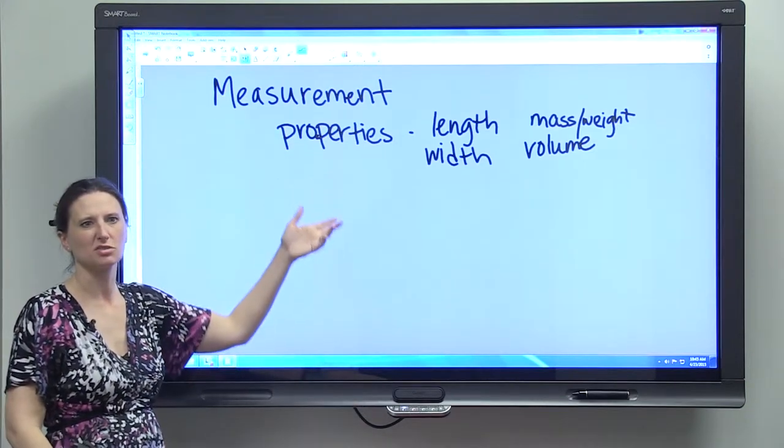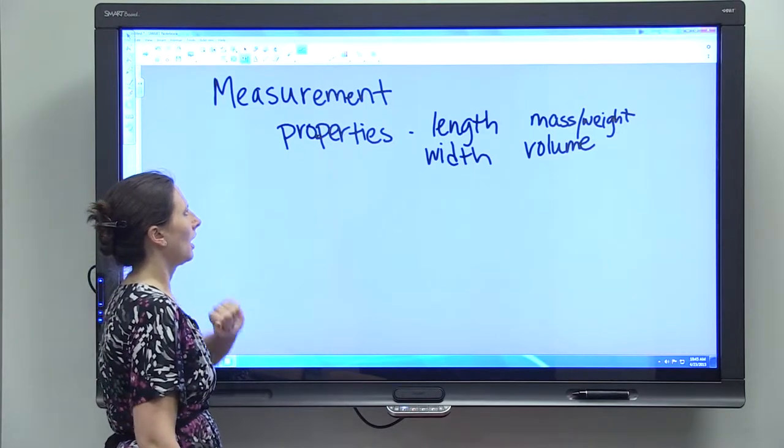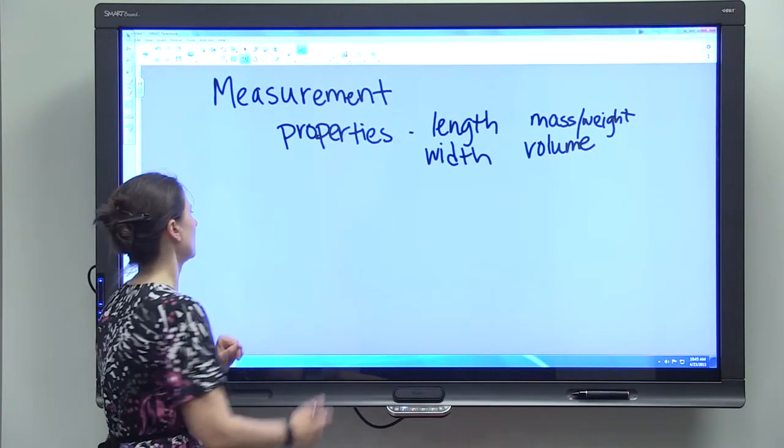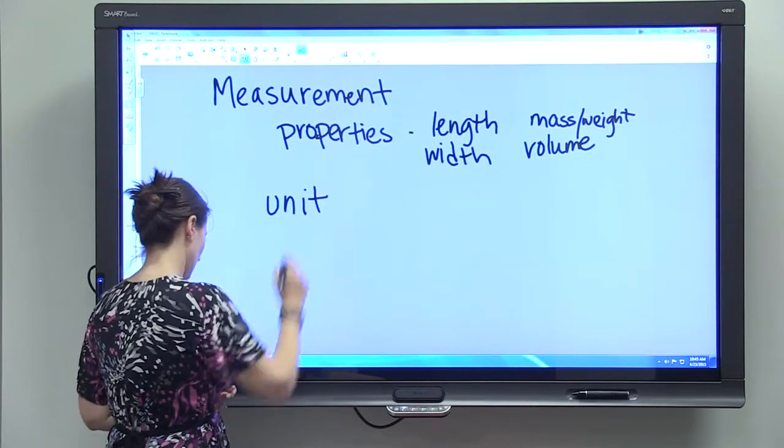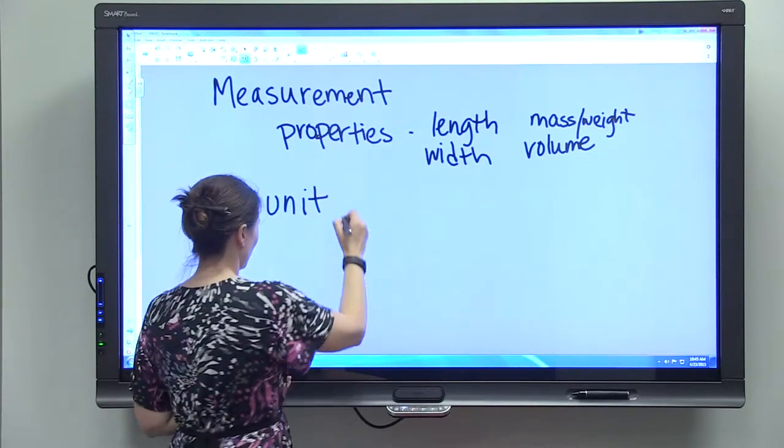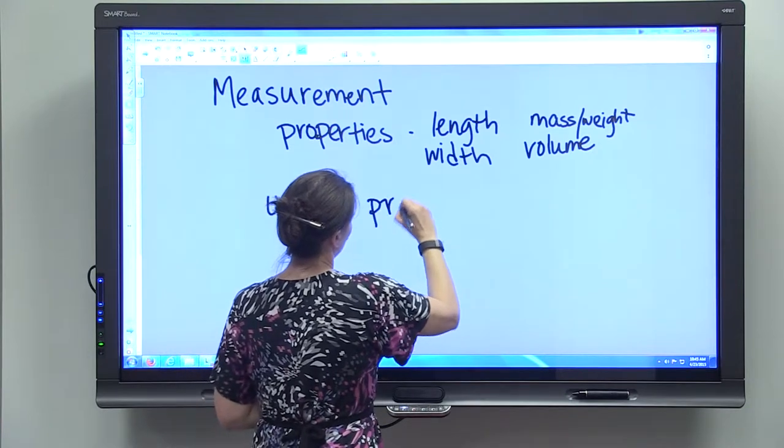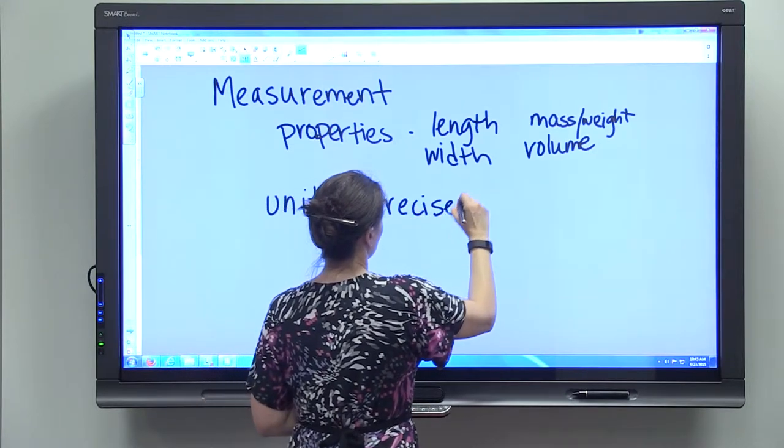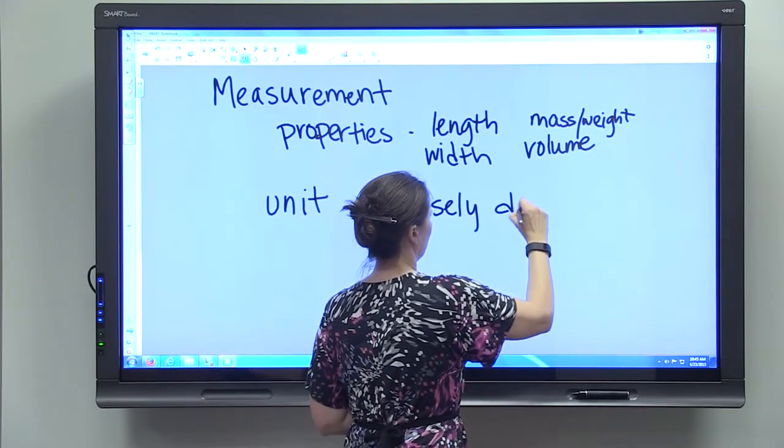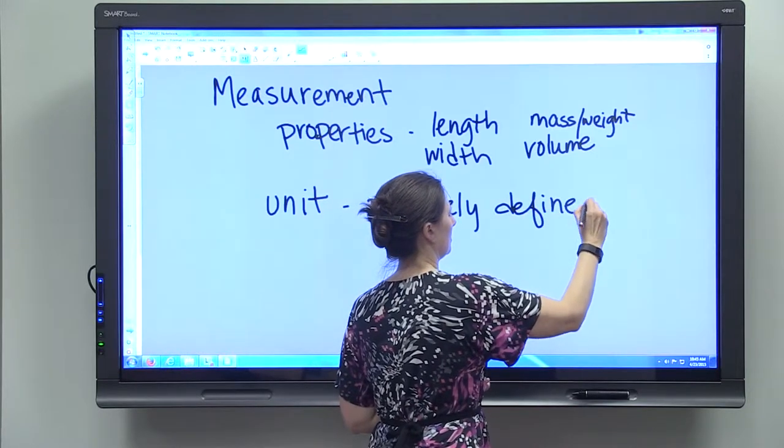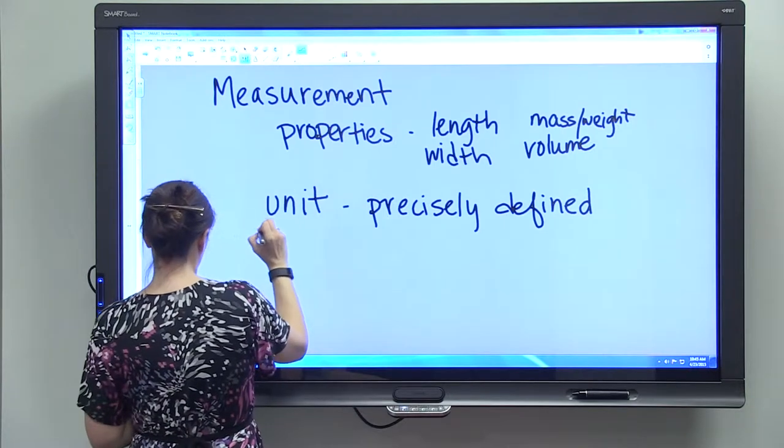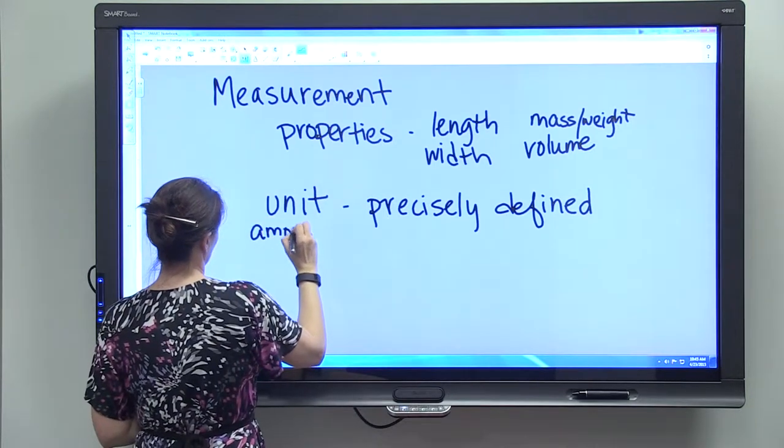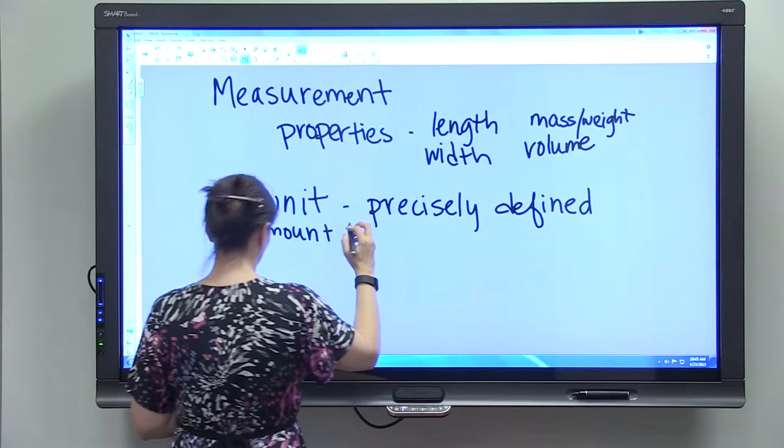So measurement tells us about the properties of an object or substance, and the way that we use measurement is we use a unit. A unit is a precisely defined amount of one of those properties.